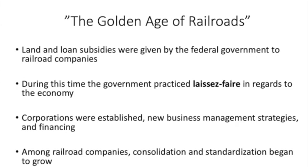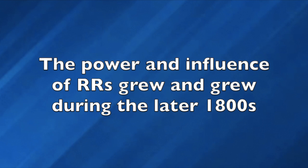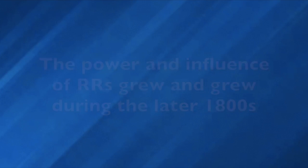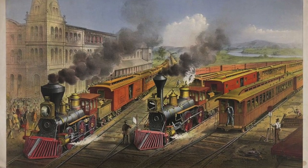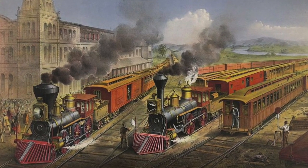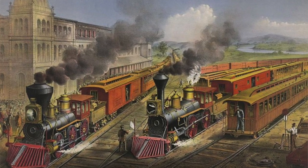Among railroad companies, consolidation and standardization began to grow, and individual railroad companies became more and more powerful. Prior to this period, railroad gauges were actually different sizes. During the latter half of the 19th century, rails became uniform throughout the United States, making rail travel even more efficient and more widespread.